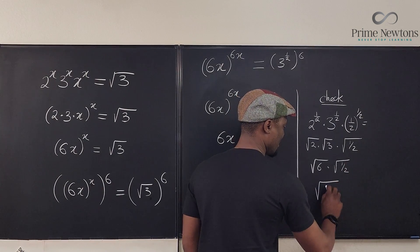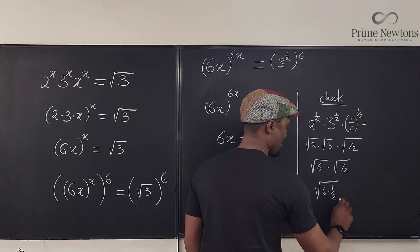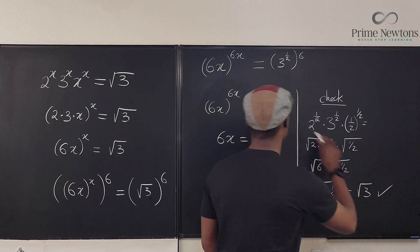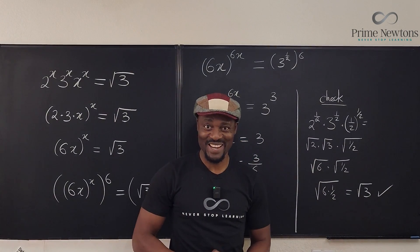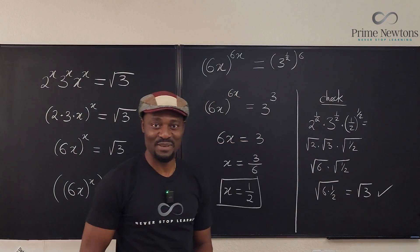That's going to be the square root of 6 times 1 half, which is equal to the square root of 3. Yay! We're correct. Never stop learning. Never stop learning, stop living. Bye-bye.